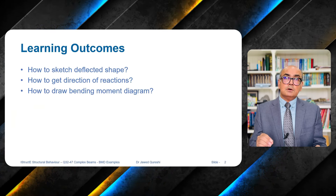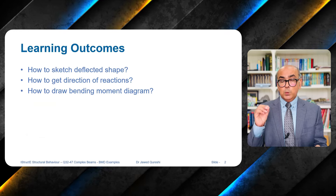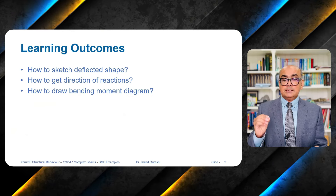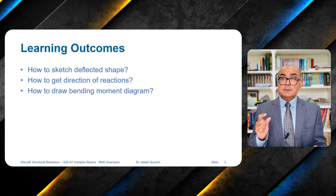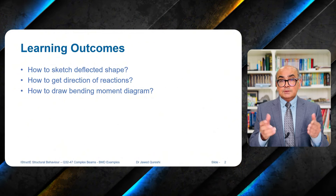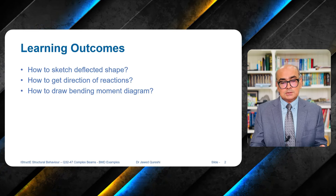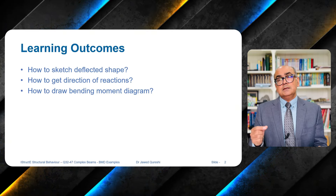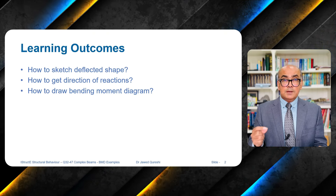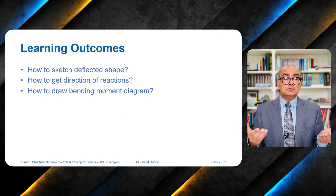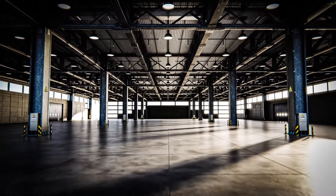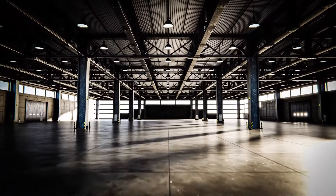The learning outcomes of this lecture are three. First, you will be able to plot the deflected shape. Second, you will be able to determine the direction of reactions without any calculations just by looking at the structure. Third, you will draw the bending moment diagram, which is important to see where forces are going so you can provide reinforcement in reinforced concrete or appropriate material in steel structures.